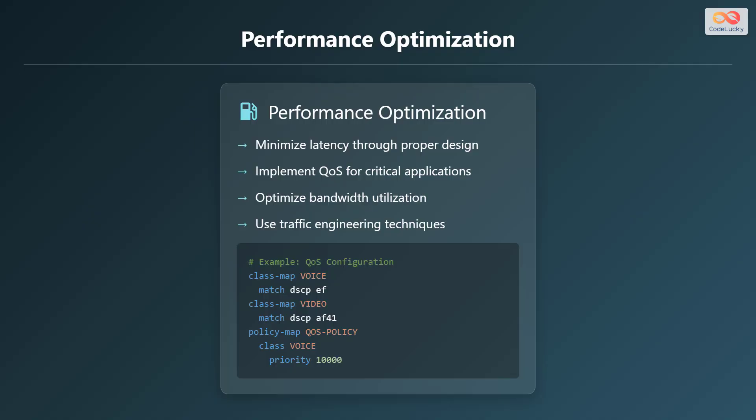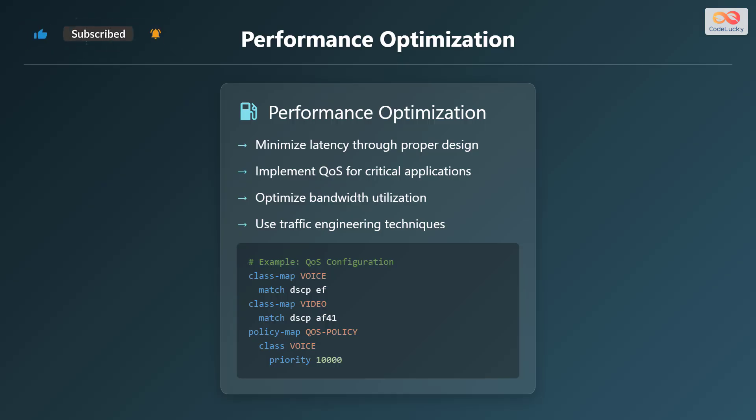Let's explore performance optimization. Minimize latency through proper design and implement Quality of Service (QoS) for critical applications. Optimize bandwidth utilization and use traffic engineering techniques. Here is an example of a QoS configuration — it prioritizes voice traffic using DSCP values.